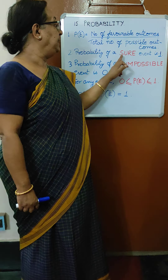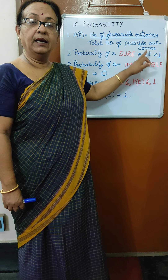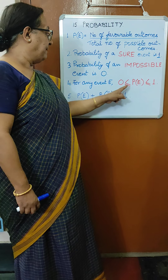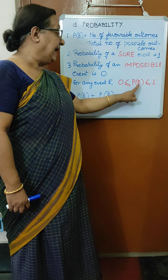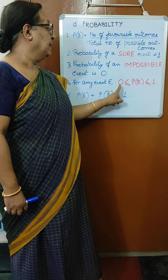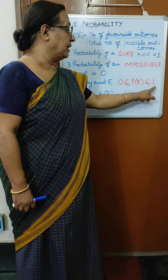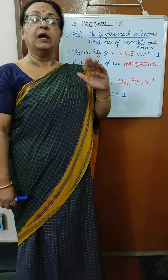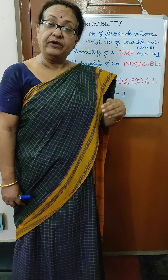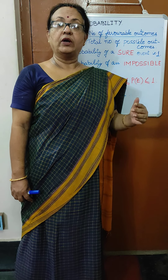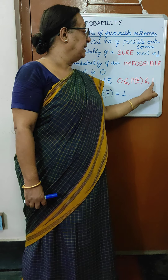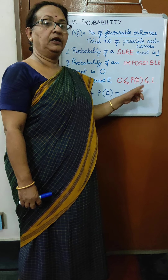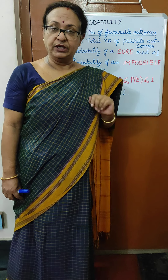So we have seen that the probability of a sure event is 1 and of an impossible event is 0. Therefore, the probability of any event always lies between 0 and 1, inclusive. Probability can never be less than 0 or more than 1, and you always get probability as a fraction.